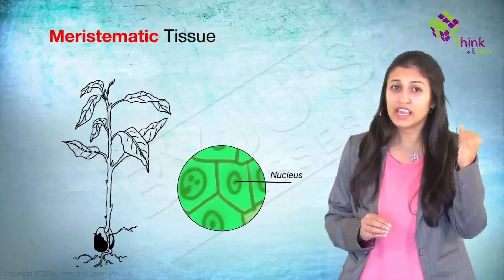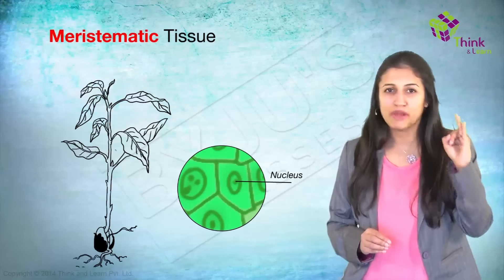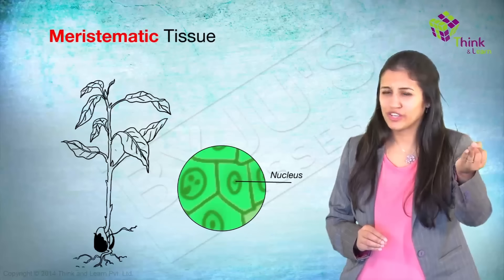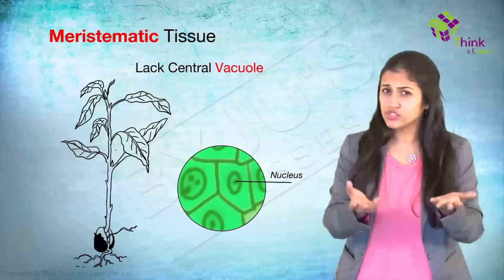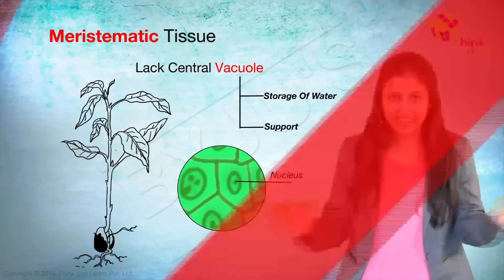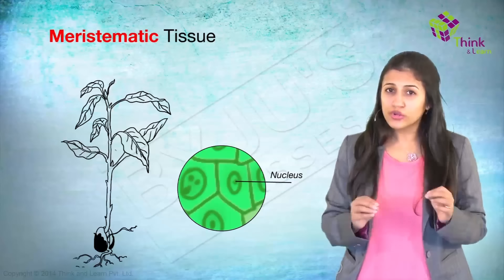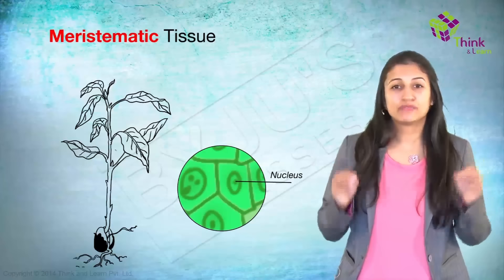And so they have one, a huge nucleus and two, they lack one major organelle that is found only in plants, the central vacuole. And why do they lack that? The vacuole's main function is the storage of water and support and meristematic cells need neither. This is why vacuoles are very small or altogether absent in the meristematic tissue.